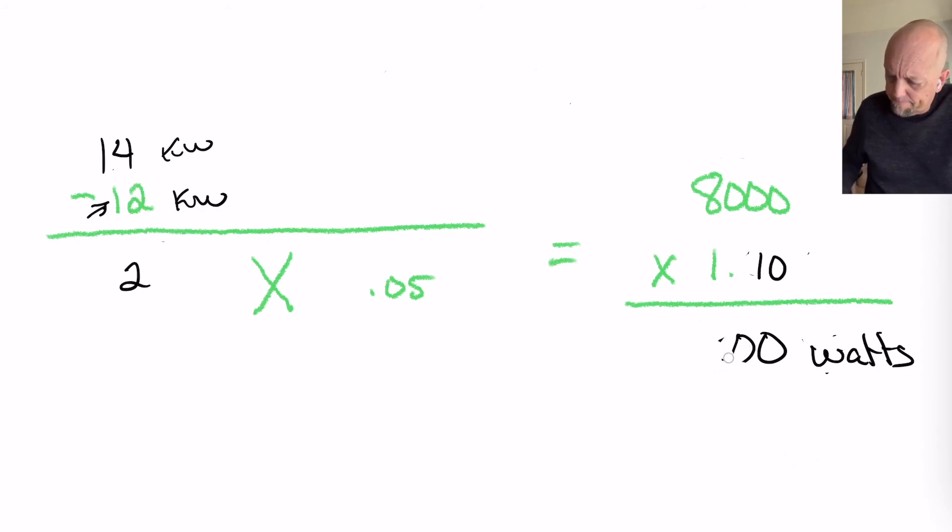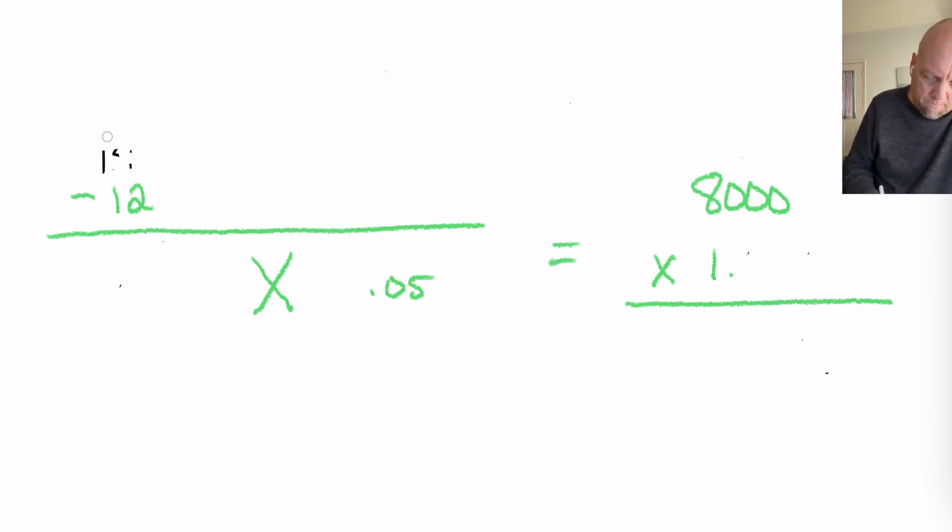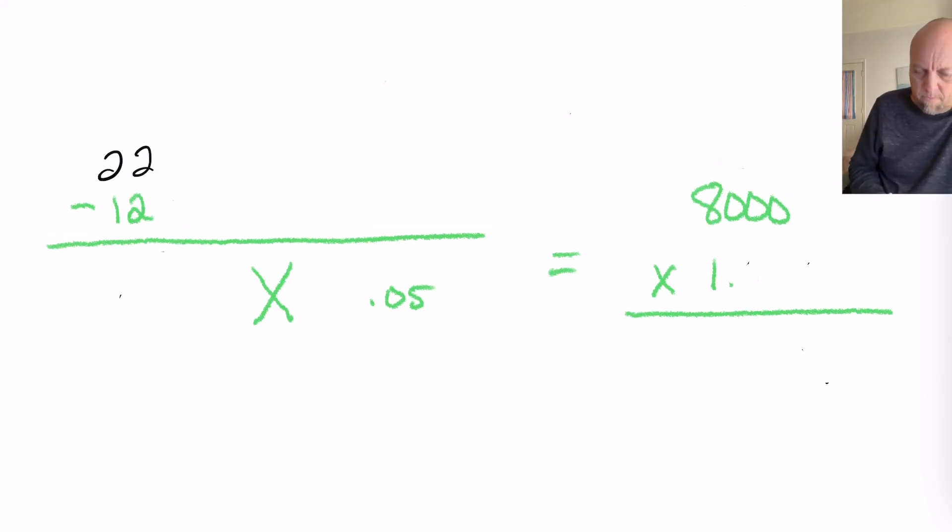Let's erase this. And we can put any number in here. Say you had a 22 kW range. 22 kW range. Subtract 12 from it. That's 10. Multiply it times 0.05,